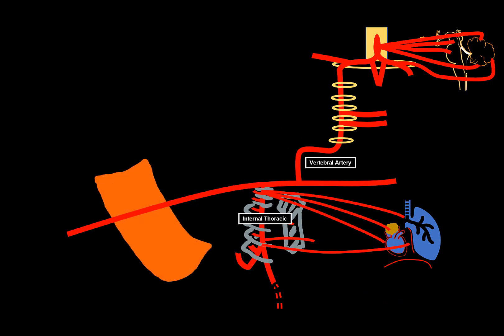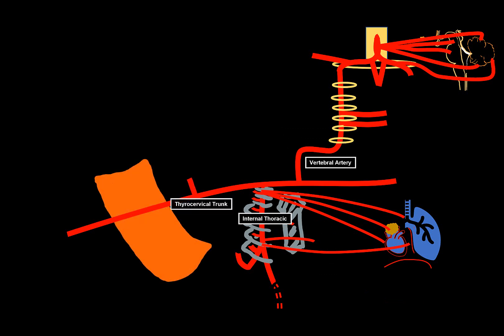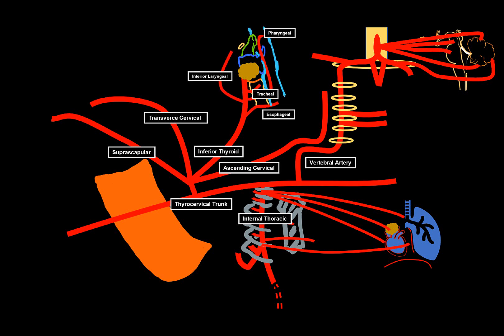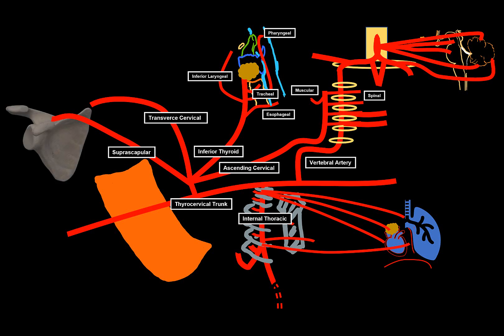Next is the thyrocervical trunk, a short trunk arising very close to the first rib, which divides into four arteries: the inferior thyroid, the ascending cervical, the transverse cervical, and the suprascapular. The inferior thyroid ascends and terminates at the thyroid gland, supplying surrounding structures like the larynx, trachea, pharynx, and esophagus. The ascending cervical has the same side branches as the transverse part of the vertebral artery — spinal branches for the spinal cord and muscular branches for the deep and lateral muscles of the neck. The suprascapular runs to the scapula, supplying the supraspinous and infraspinous muscles, then communicates with the circumflex scapular artery of the subscapular artery, which comes from the axillary artery.